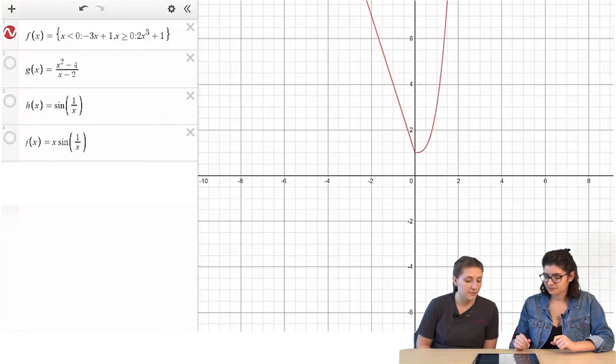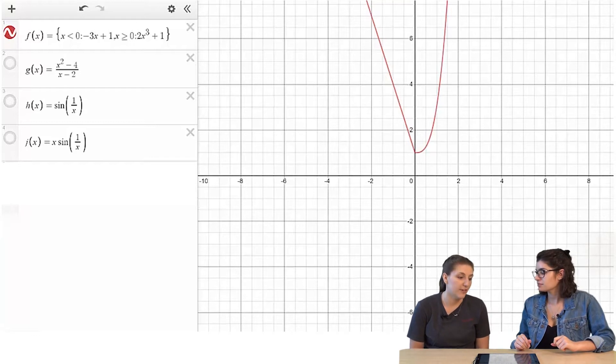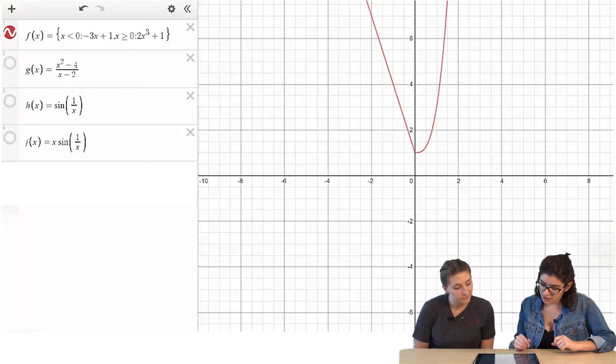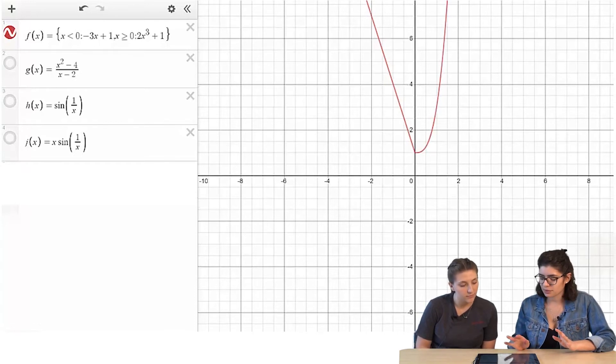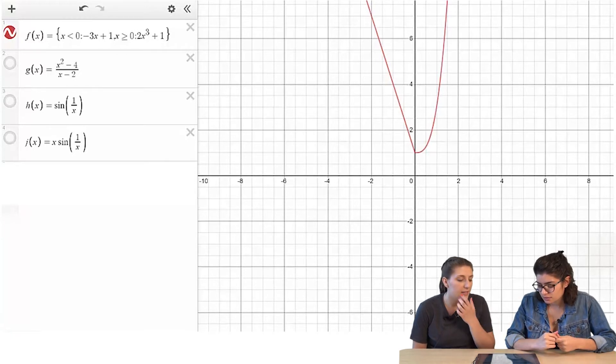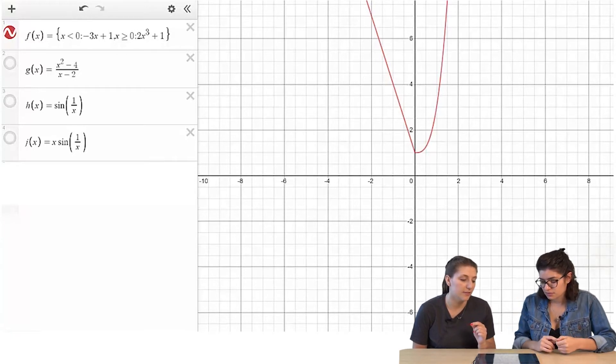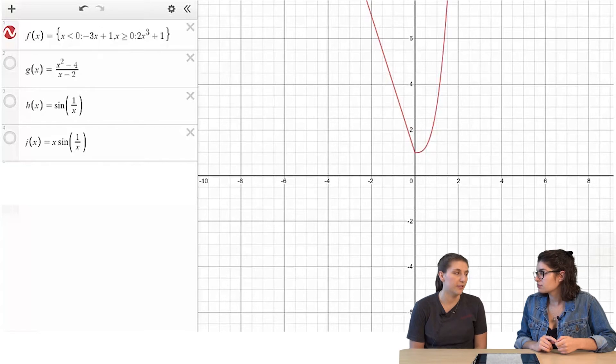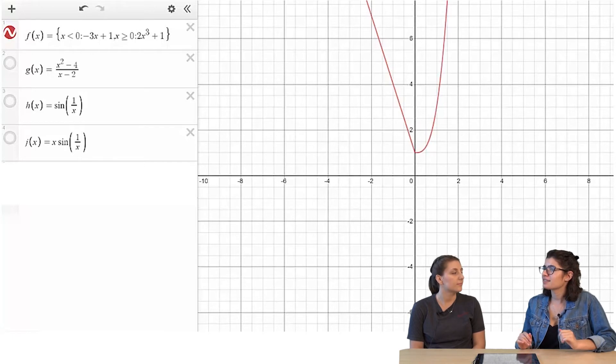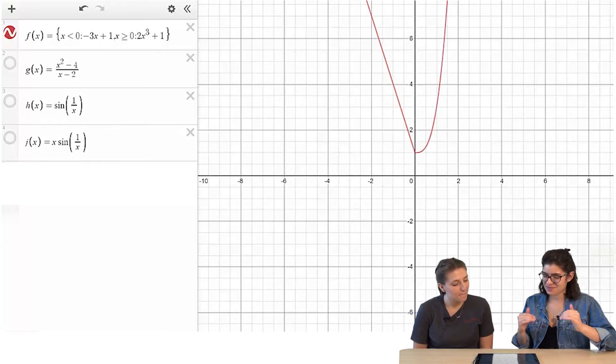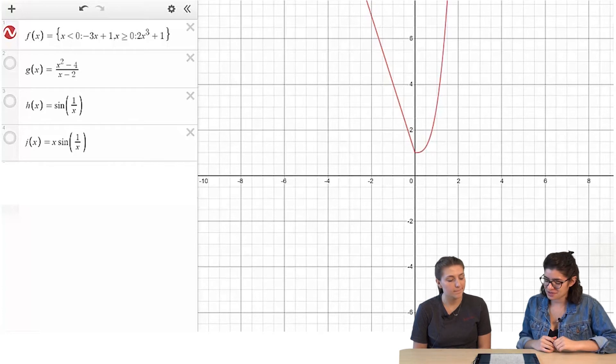I mean, it looks continuous to me. There's no holes in the graph. Alright, and so at 0, do both functions have the same value? I guess would be my only question, since it's piecewise. Well, it has x is less than 0, and then x is greater than or equal to 0, so why don't you just go with the greater than or equal to 1? Like, yes, but no, because you're coming from different sides, so you want to make sure that the left and the right hand limit are the same.